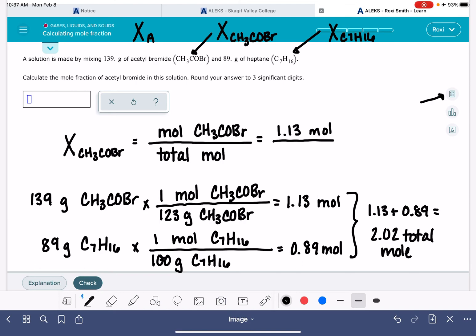And that's going to be the denominator, 2.02. Notice that the mole unit cancels, so this is going to be a unitless number. Sometimes students want to express this as a percentage, and that's not accurate. It should be expressed as a decimal. This says three significant figures, so I'm going to have 0.559. That is the mole fraction of acetyl bromide.